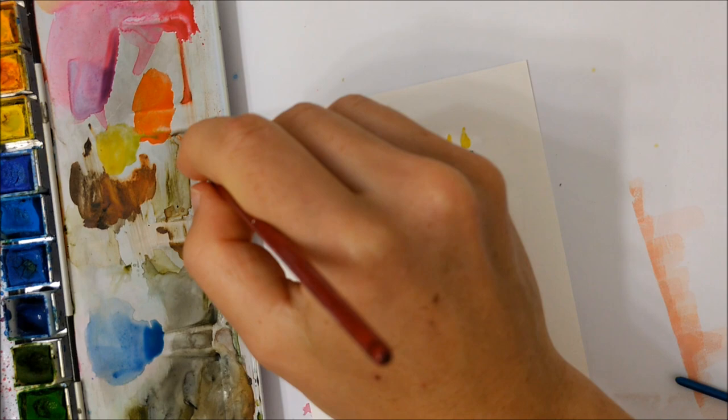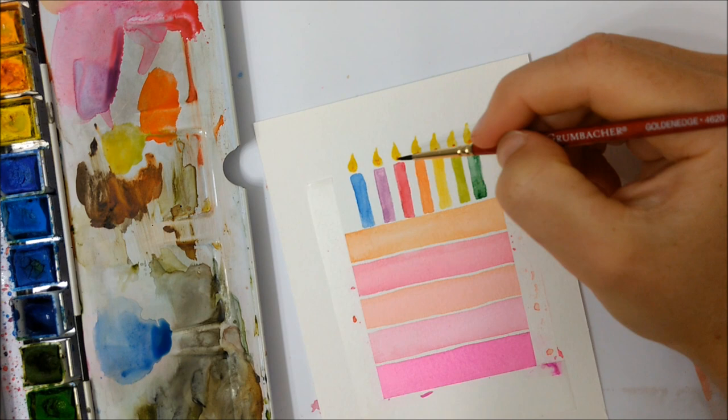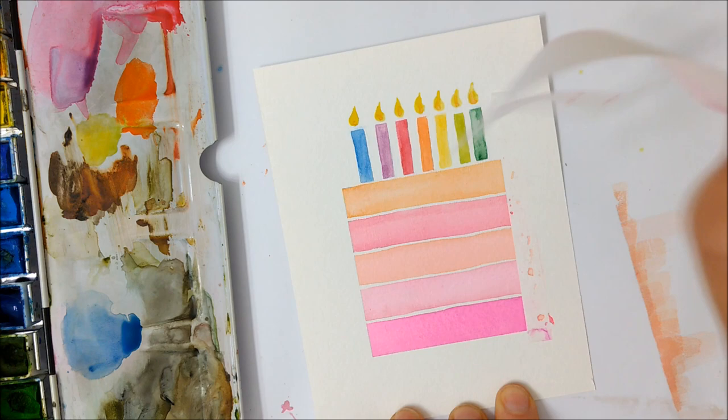And you can definitely add some orange watercolor while the yellow is still wet just to add a little bit of variation to the flame. And once that has completely dried, you can peel off the tape. You could have done this earlier as well.